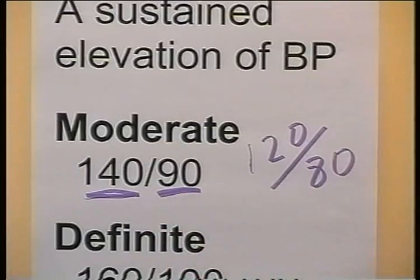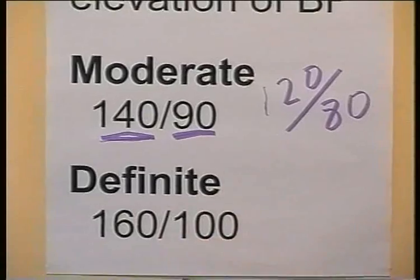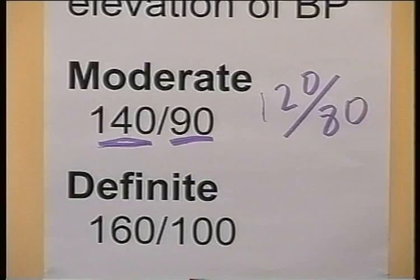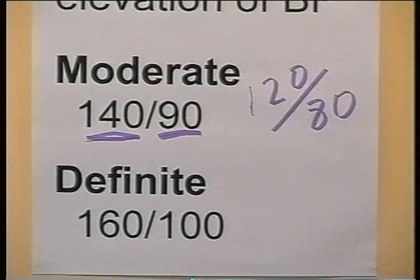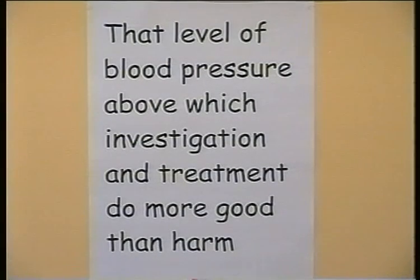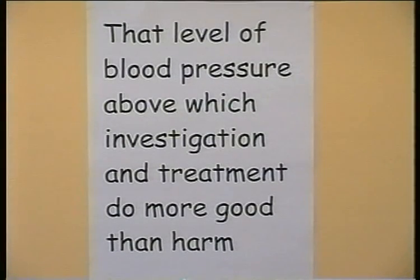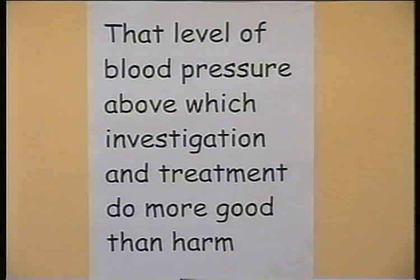Definite hypertension - everyone would agree - is 160 over 100, or a systolic over 160 or a diastolic over 100. Professor Jeffrey Rose defined blood pressure as that level above which investigation and treatment do more good than harm. So over 140/90 is a moderate rise, and over 160/100 is a definite rise. A blood pressure over 160/100 would definitely require treatment; 140/90 would require consideration as to whether treatment was appropriate.